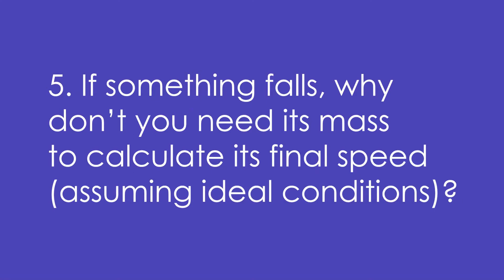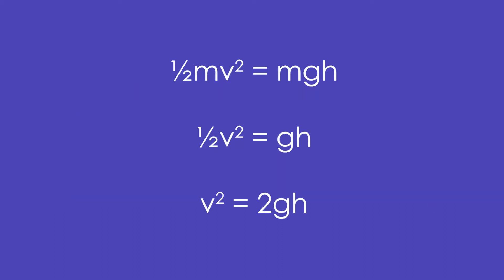5. If something falls, why don't you need its mass to calculate its final speed, assuming ideal conditions? It's because half mv squared equals MGH, so the M's cancel, and we end up with V squared equals 2GH. If you want to find V, just square root.